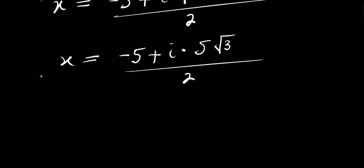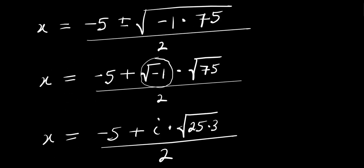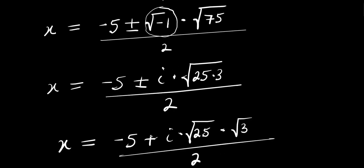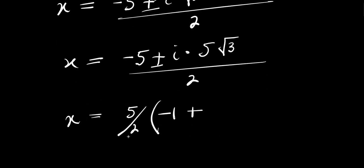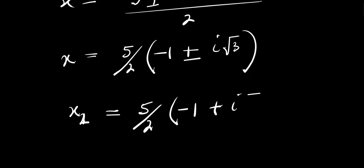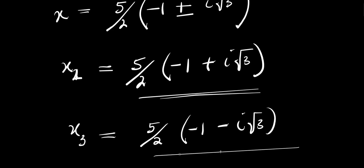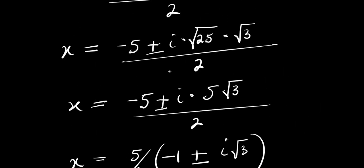We can factor out five over two from here, giving x equals five over two times negative one plus or minus i times the square root of three. So we have two complex values for x. Since we already have x₁ equals five, we get x₂ equals five over two times negative one plus i root three, and x₃ equals five over two times negative one minus i root three.